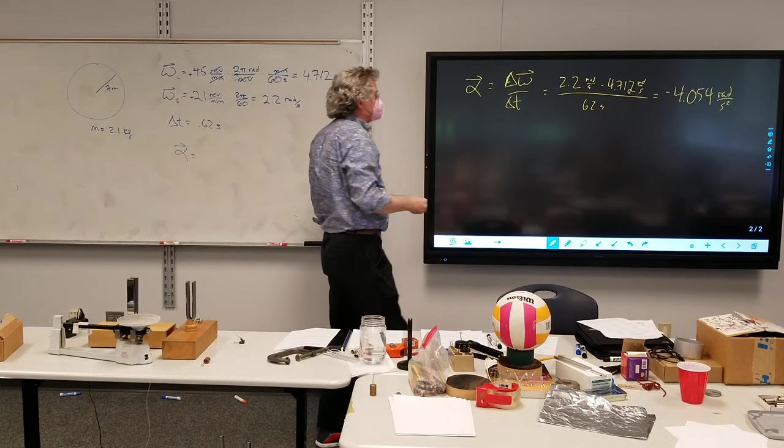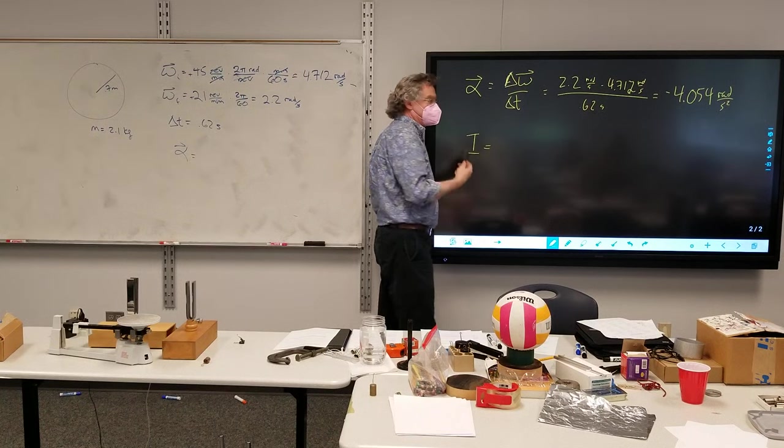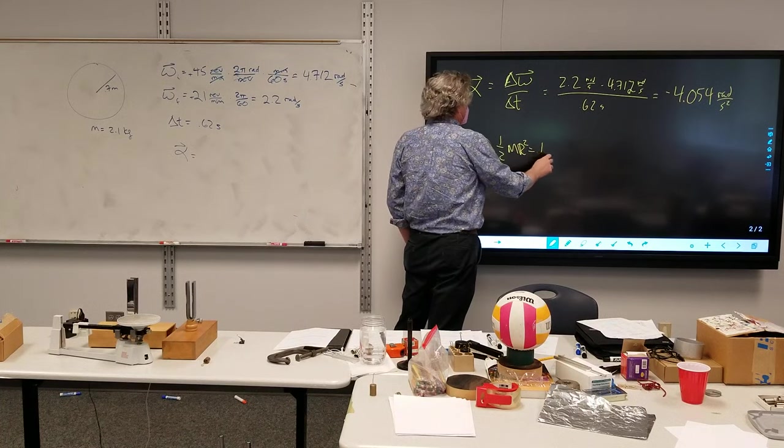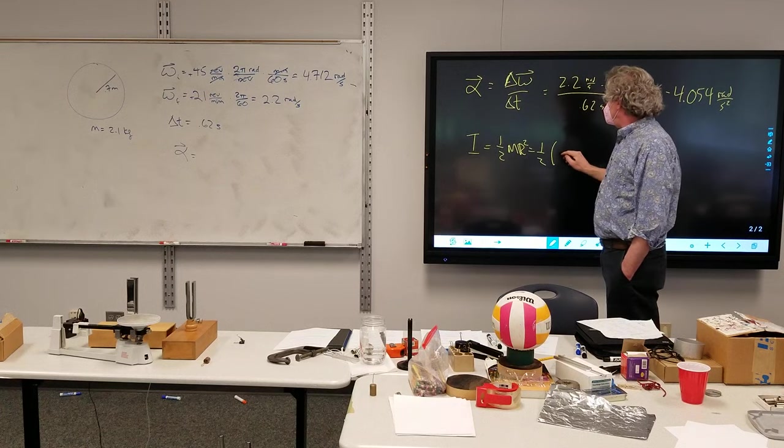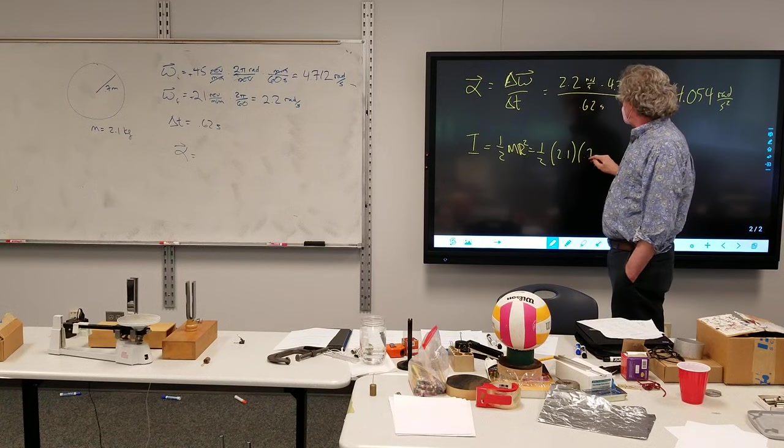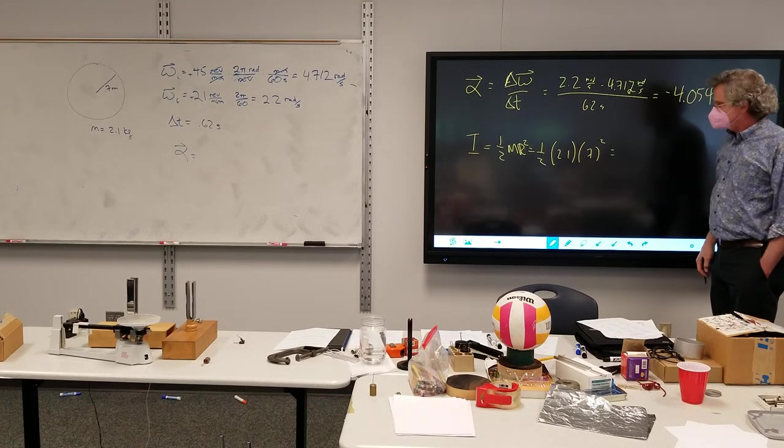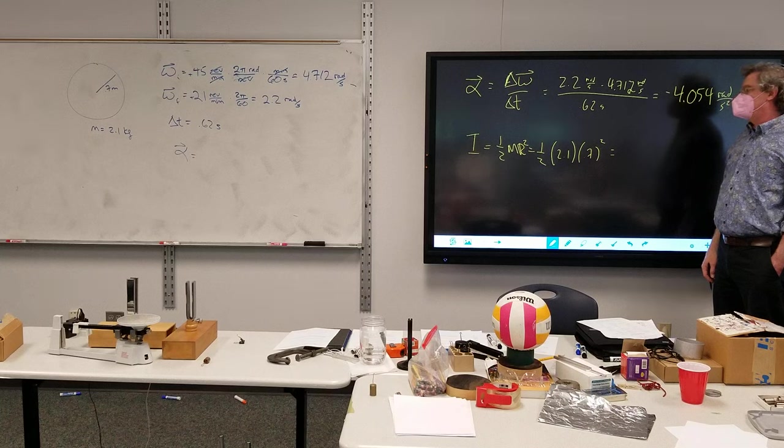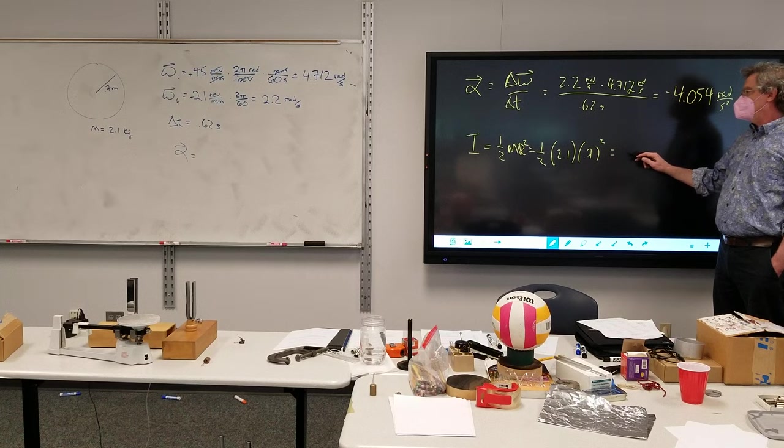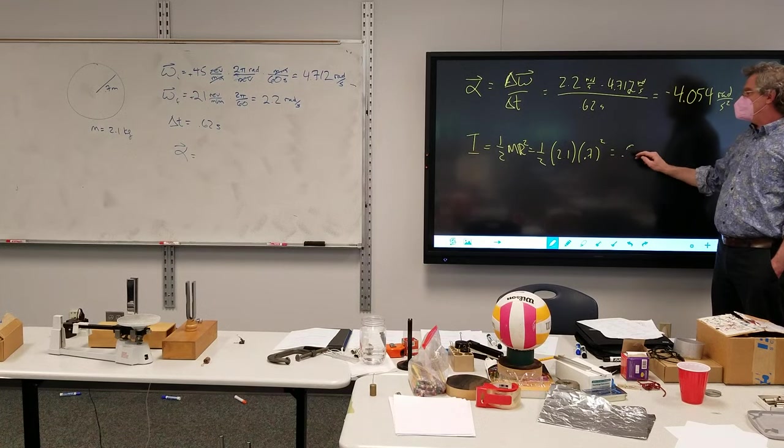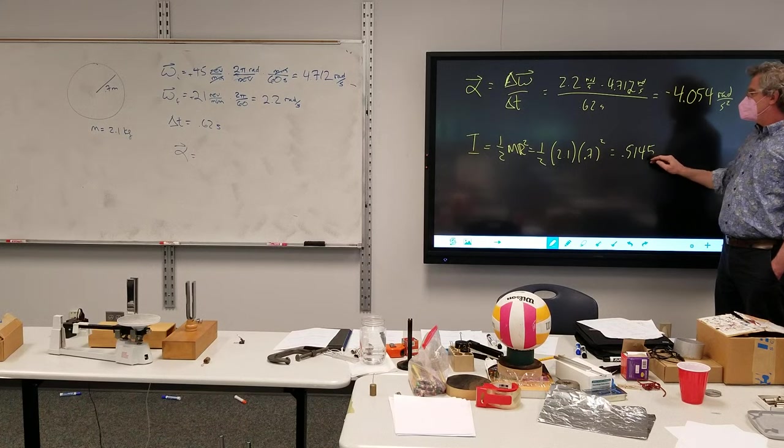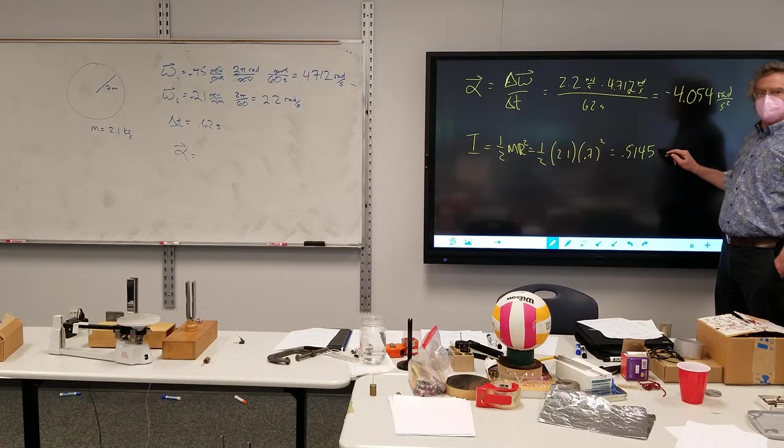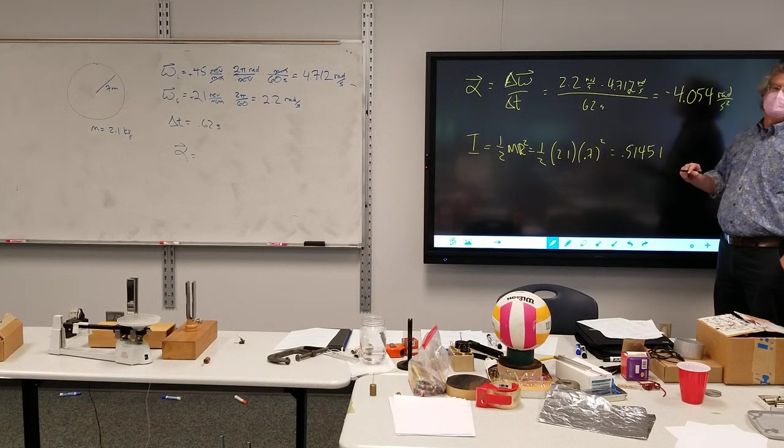Initial moment of inertia of the disk. What's the formula for the moment of inertia of a disk? So that is 1 half times 2.1 times 0.7 squared, somewhere around 0.5. That's 0.5145. Units? Kilogram meter squared. Kilogram meter squared, there we go.